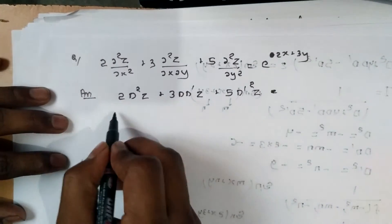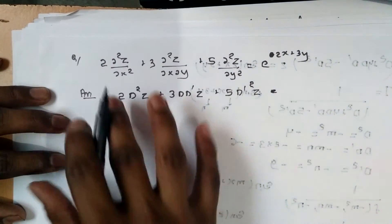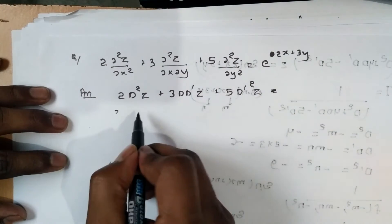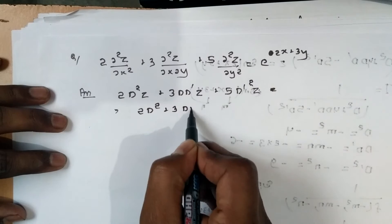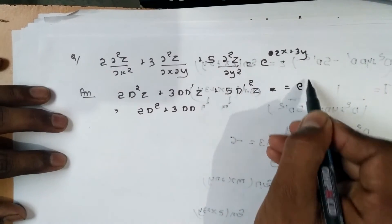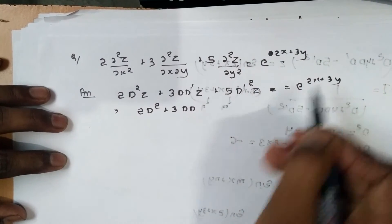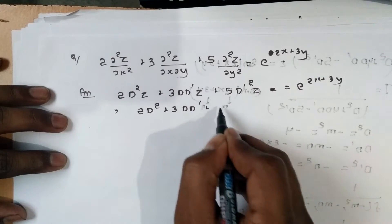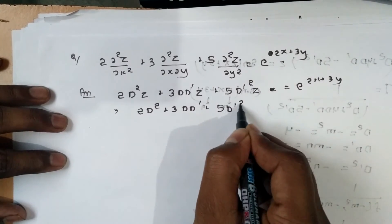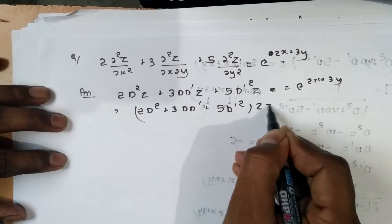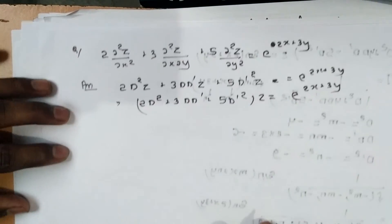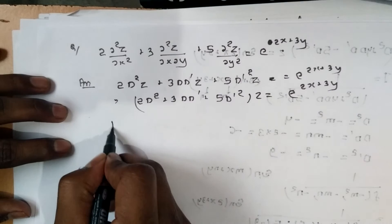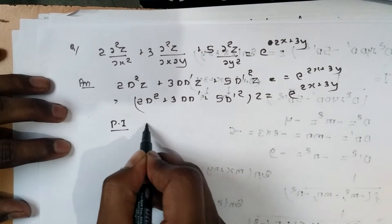Now take the operator (2D² + 3DD' + 5D'²)z = e^(2x+3y). We write the particular integral as: